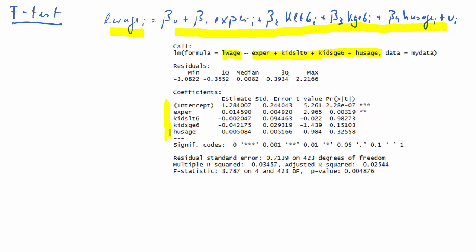So that's the output that comes from R for that full regression model. If we look at these three variables, kids less than 6, kids greater than or equal to 6, and husband's age, they all sort of give you information about the family circumstances of that particular woman in the data set.